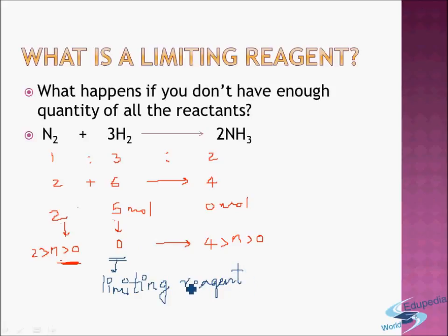Hydrogen, as the limiting reagent, limits the extent of your reaction — it ensured ammonia formed was less than four moles, and nitrogen consumed was less than two moles. It's like studying physics, chemistry, and maths: if you study very little chemistry while doing well in physics and maths, your overall performance gets limited by chemistry. Similarly, hydrogen has put a limitation on the reaction — hence it is the limiting reagent.